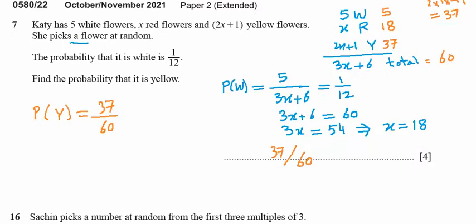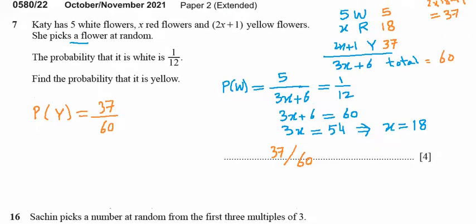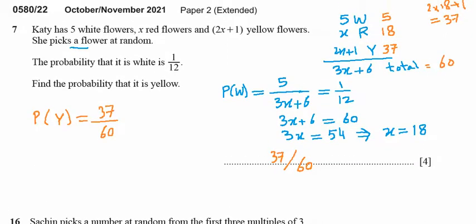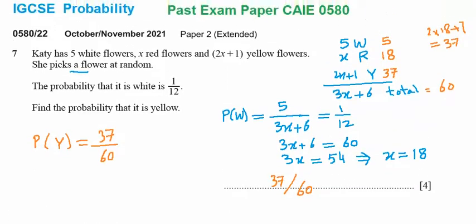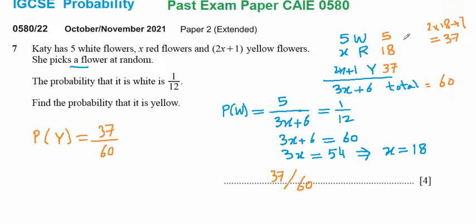To extend the knowledge further — this is not part of the original question — if two flowers are chosen at random, what is the probability that both are yellow?